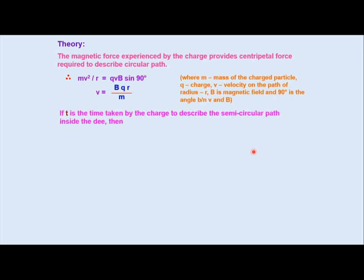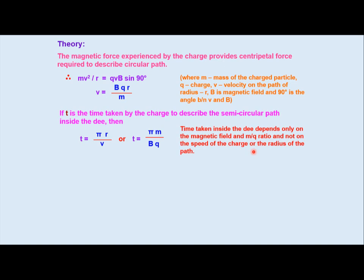If t is the time taken by the charge to describe the semicircular path inside the dee, then t = πr/v or t = πm/Bq. Time taken inside the dee depends only on the magnetic field and m/q ratio and not on the speed of charge or the radius of the path. If T is the time period of the high frequency oscillator, then for resonance, T = 2t or T = 2πm/Bq.